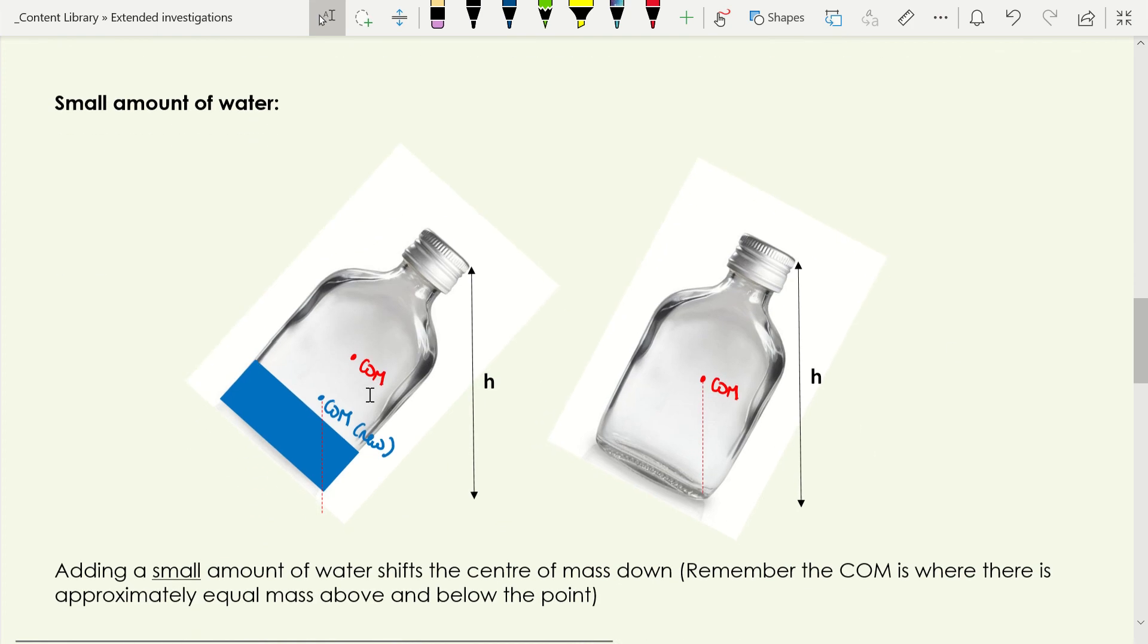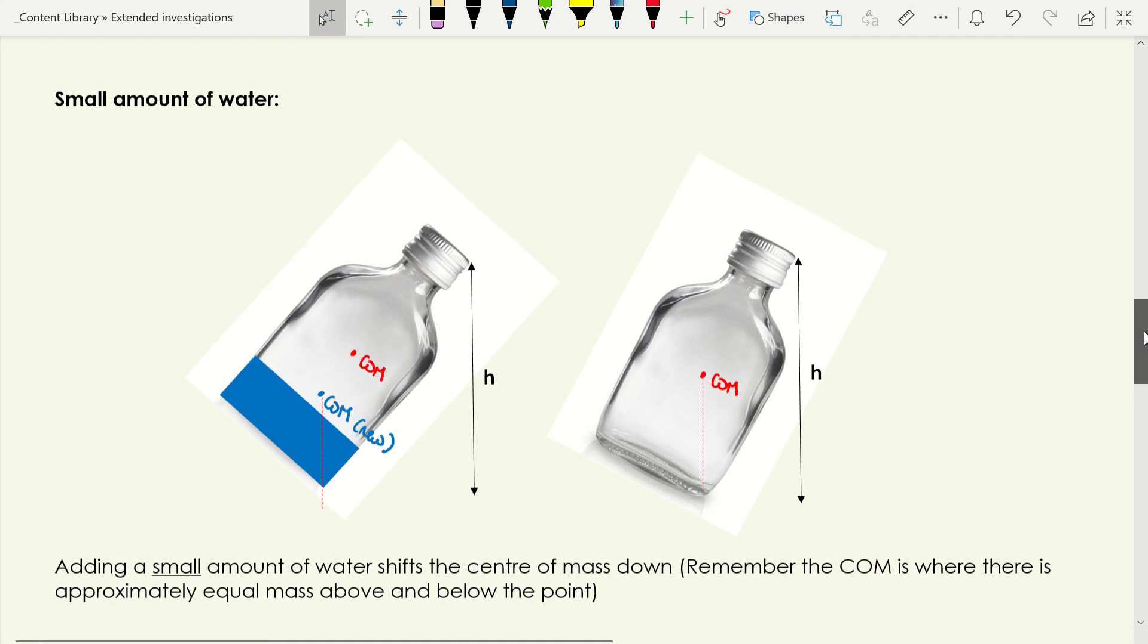If you add a very small amount of water, what that actually does is shift the center of mass downwards because water is a lot more dense than the bottle is. So you have a lot of mass down here, and actually that means the center of mass is somewhere down here. The center of mass is actually shifted down, and that will give you a different value of h. Your value of h will actually be a lot smaller here because you have to tip it a lot further to make this one topple over. That's what's going on when we add a small amount of water. We get smaller values of h typically.